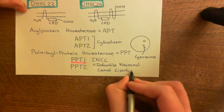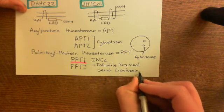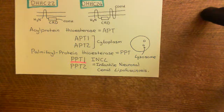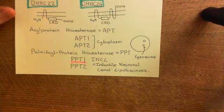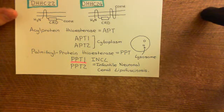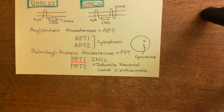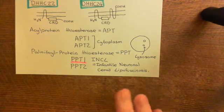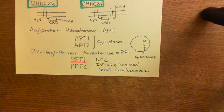Infantile neuronal ceroid lipofuscinosis is an extremely rare disease. The child develops normally for the first year of life, but then gradual neurodegeneration sets in — they progressively lose the ability to move, lose sight, and eventually it kills them. It is a horrible disease, but thankfully very rare. It results from a double mutation of the palmitoyl protein thioesterase 1 enzyme, making it a recessive disorder.